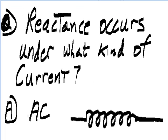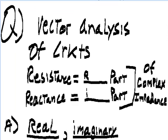Reactance occurs under what kind of current? Answer: AC. Vector analysis of circuits. Resistance equals blank part. Reactance equals the blank part of complex impedance. Answer: resistance equals the real part and reactance equals the imaginary part of complex impedance.